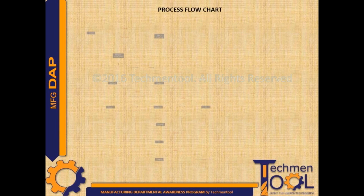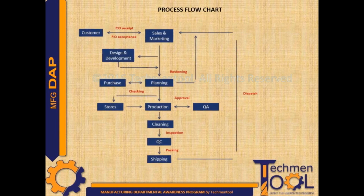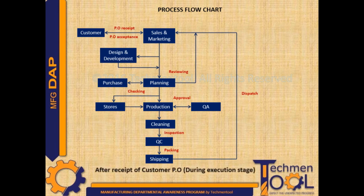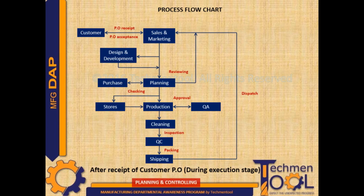Now let us see the flowchart of the planning and control stage. Here, the sales and marketing department receives the customer order and moves it to the design or planning department. The planning department reviews the necessary requirements for fulfillment of customer needs and communicates with purchase or stores. Once all things are finalized, production starts and quality inspects for any defects. Finally, the sales and marketing department ships the inspected parts to the customer.